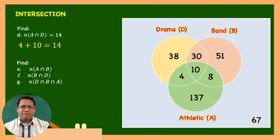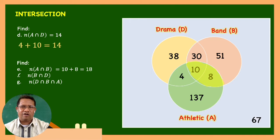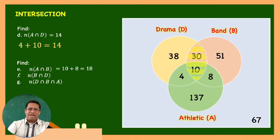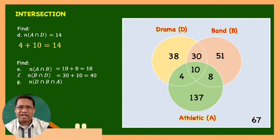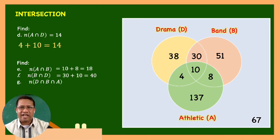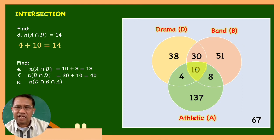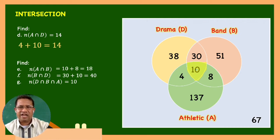The cardinality of the intersection of A and B is 10 + 8 = 18. The cardinality of the intersection of B and D is 30 + 10 = 40. The cardinality of the intersection of all three events A, B, and D is equal to 10.